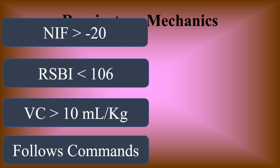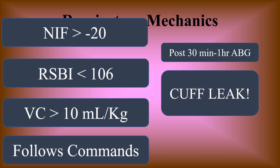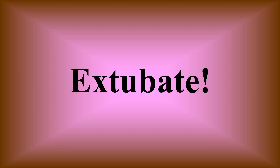Make sure the patient is following commands, alert, awake, and oriented times three. You also want a post-trial ABG — at 30 minutes to one hour — taken while they're still on the trial, to have a representative ABG on SBT. Finally, check for a cuff leak: deflate the endotracheal tube cuff and make sure you hear a leak. Give them some deep breaths with the BVM bag if needed to hear the leak.